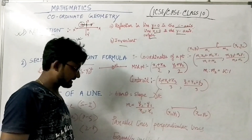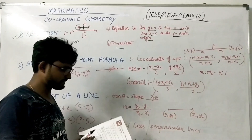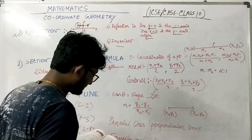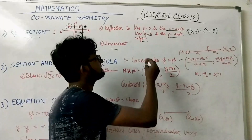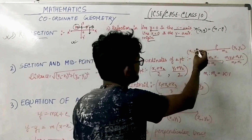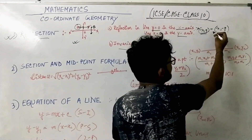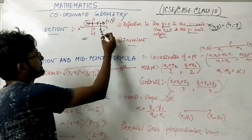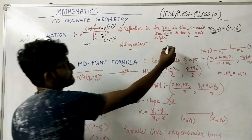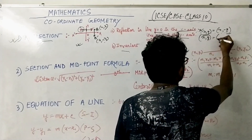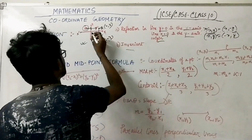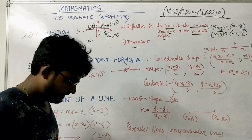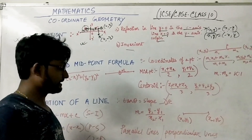Reflection is the mirror image. Reflection in the line y=0, i.e., the x-axis: if the coordinate of a point is (x, y), it will become (x, -y). For example, point (4, 3) reflects to (4, -3). For reflection in the y-axis (x=0), (x, y) becomes (-x, y) — so (2, -3) becomes (-2, 3), the sign of x changes.